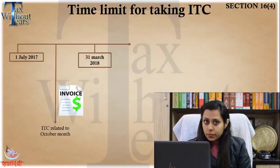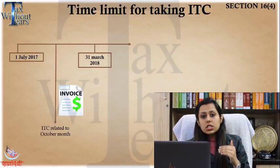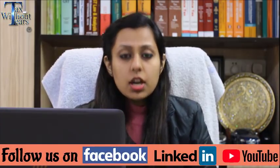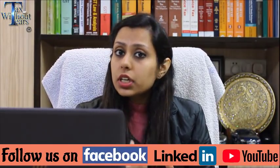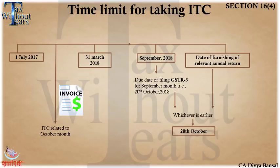The next concept is the time limit for taking input tax credit. GST was implemented from 1st July 2017, with the financial year being April 2017 to March 2018. Say I purchased goods in October 2017 and forgot to book the credit. The maximum time limit to book the credit is by the return for September 2018 — that is, by 20th October — or the annual return for financial year 2017-18, which is 31st December, whichever is earlier. So in this case the last date would be 20th October. This is the time limit by which you can actually claim the input tax credit if you forgot to book it at the time of purchase.